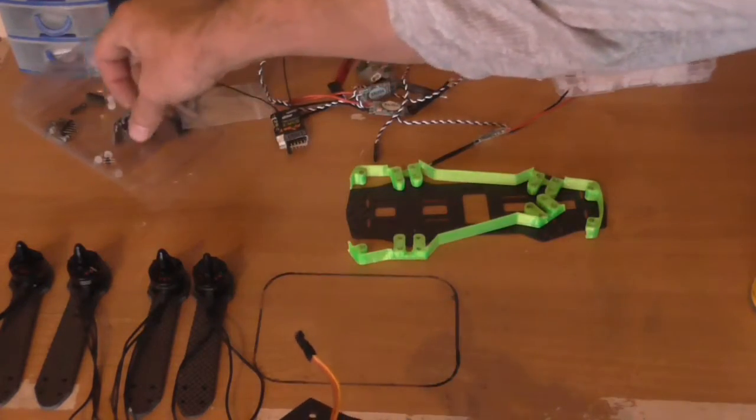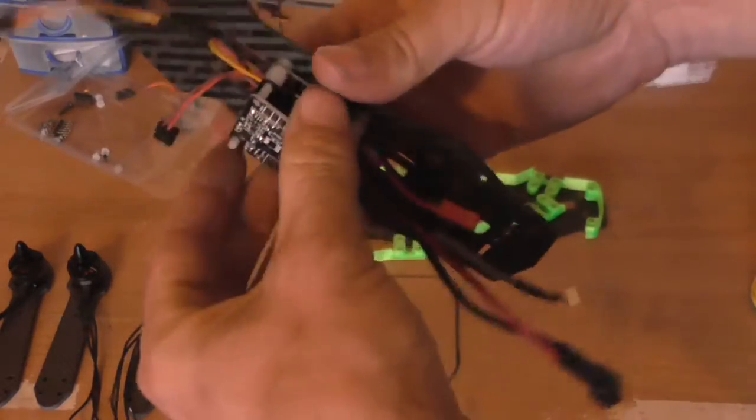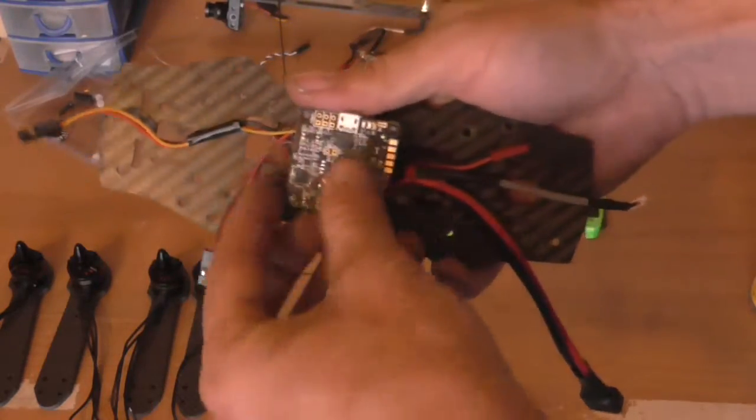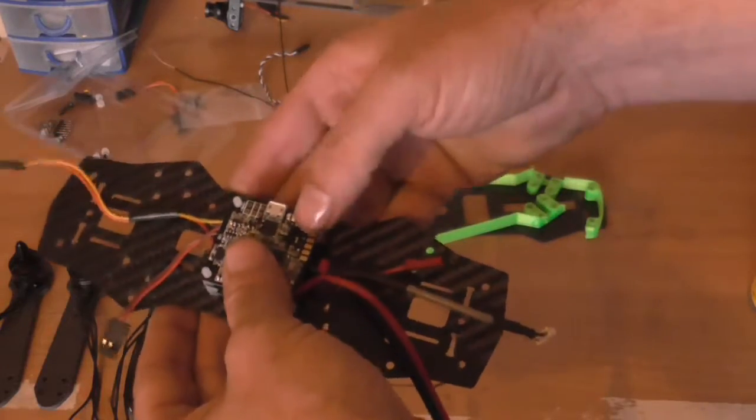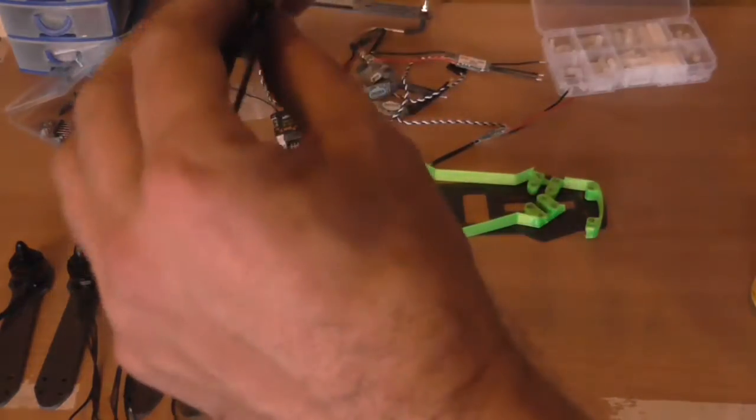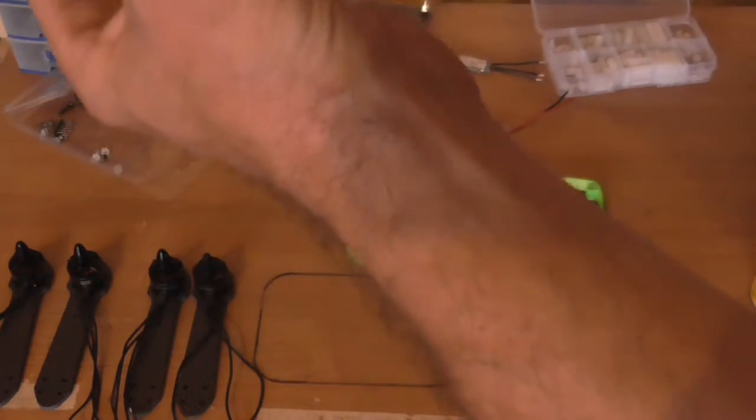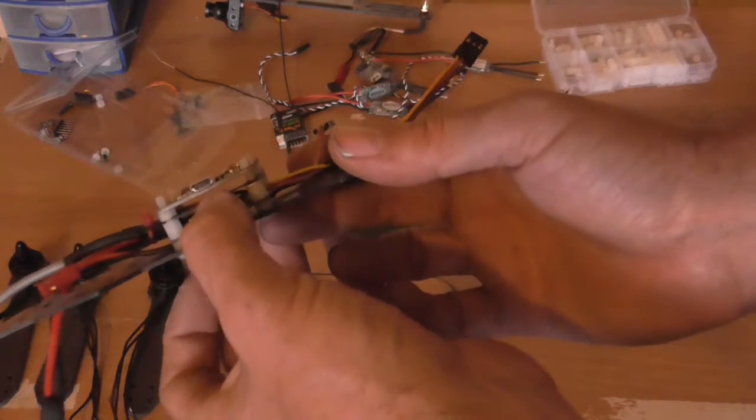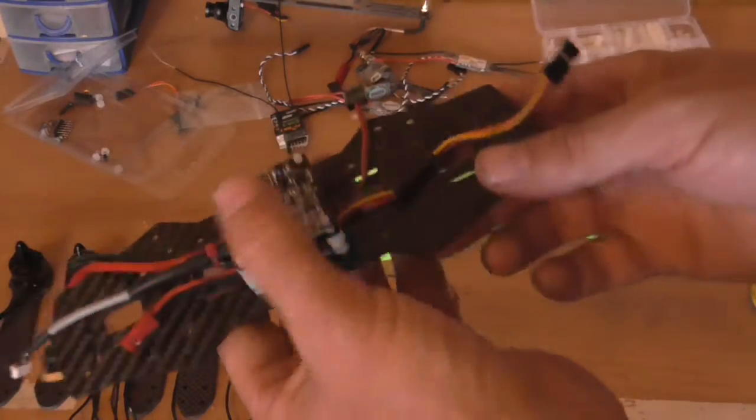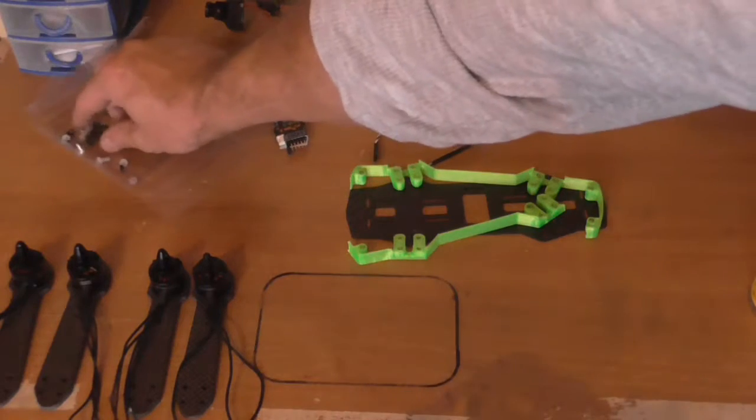I'll put that on top of there. You get the general idea - that sits on top of there nice and flush, and that piece of board there stops any contact between the power distribution board or any arcing from there to there.